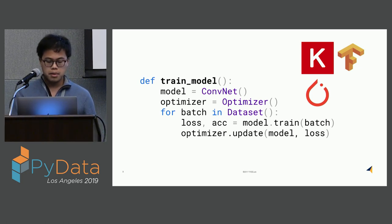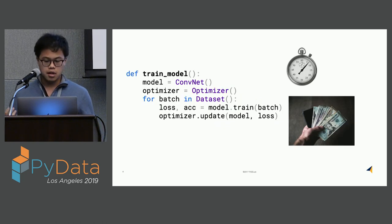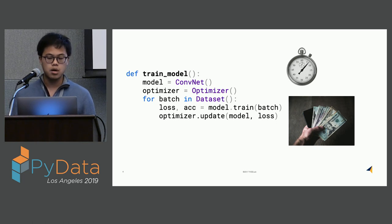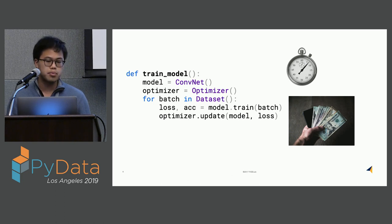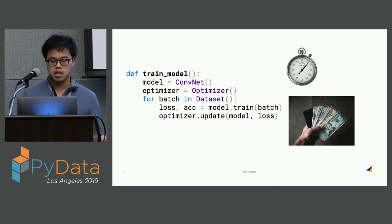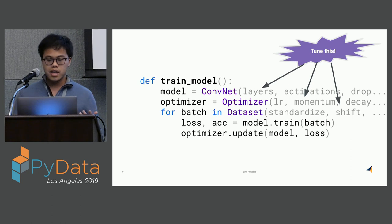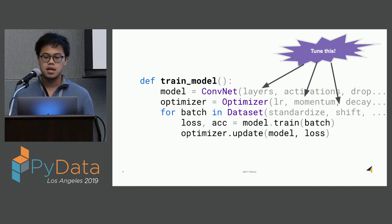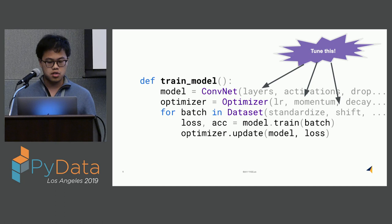This is pretty simple, but there are a couple of dirty secrets. First, the training process is going to take a lot of time. You're also likely using a GPU or multiple GPUs, which is going to cost you a lot of money. And the biggest dirty secret is that every abstraction here actually has plenty of configuration knobs, which we call hyperparameters. You're going to want to change the architecture of your model, adjust the learning rate and momentum, or even change the way you pre-process data.